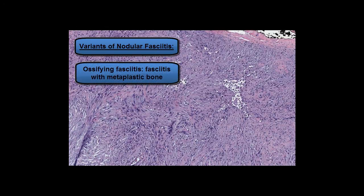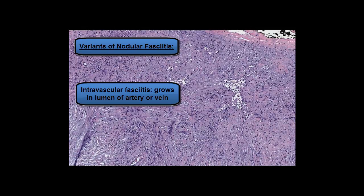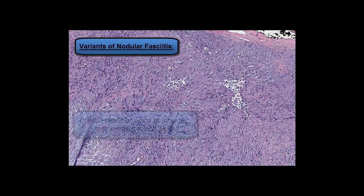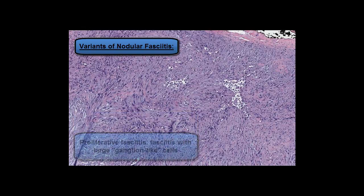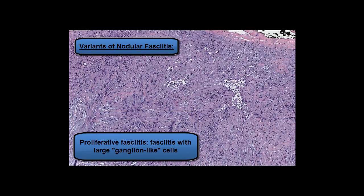Ossifying fasciitis is similar to nodular fasciitis but has areas of bone formation or metaplastic ossification. Intravascular fasciitis grows into the lumen of blood vessels including arteries, which can be very disturbing because it simulates intravascular invasion, but these are still benign lesions. Cranial fasciitis occurs on the scalp of infants, involves the soft tissue, and often erodes into or through the underlying skull — a clinically concerning scenario. Proliferative fasciitis is distinguished by the presence of large ganglion-like cells that can look quite atypical and raise concern for malignancy.